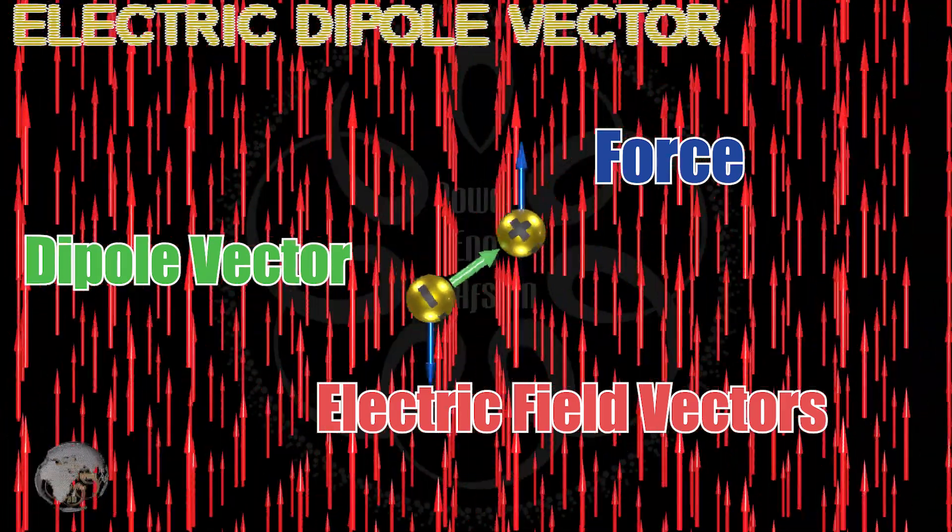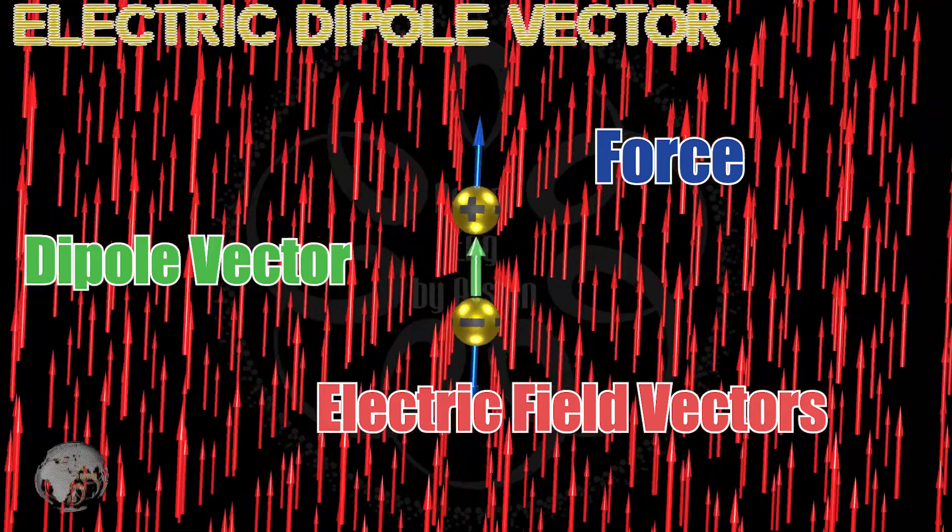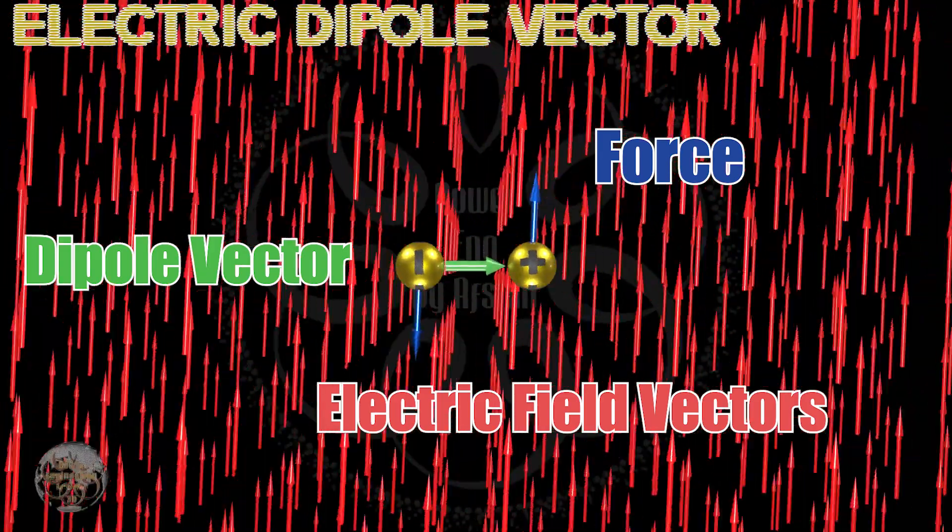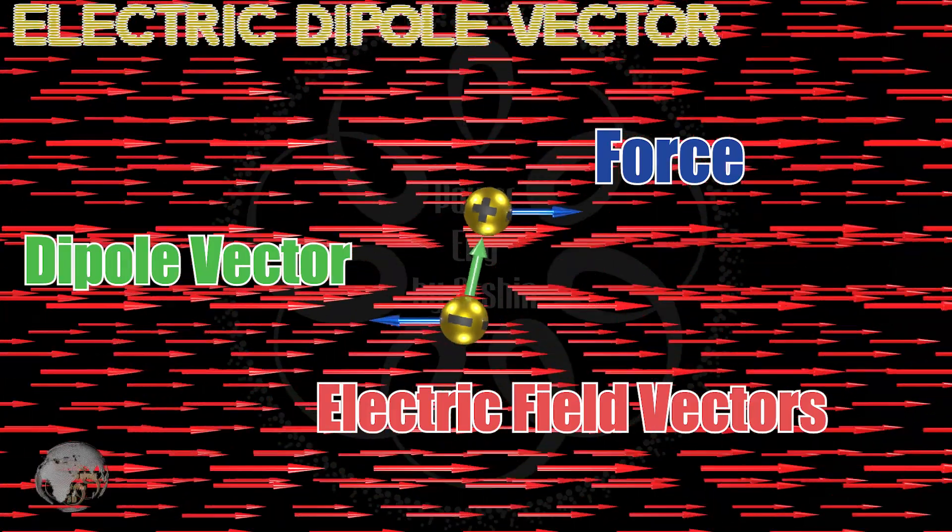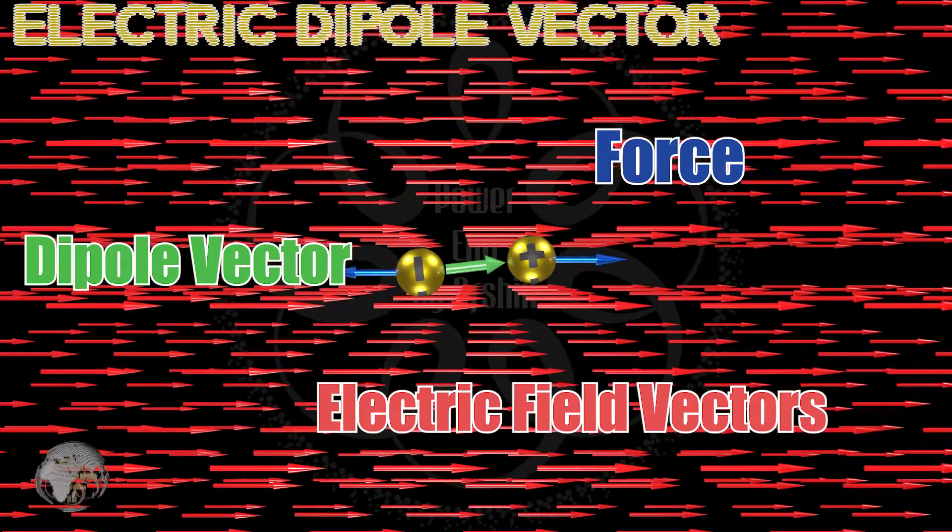This property is utilized in microwave devices. Each water molecule is an electric dipole. When water molecules are exposed to an electric field, a torque is exerted on them, causing the molecules to rotate.